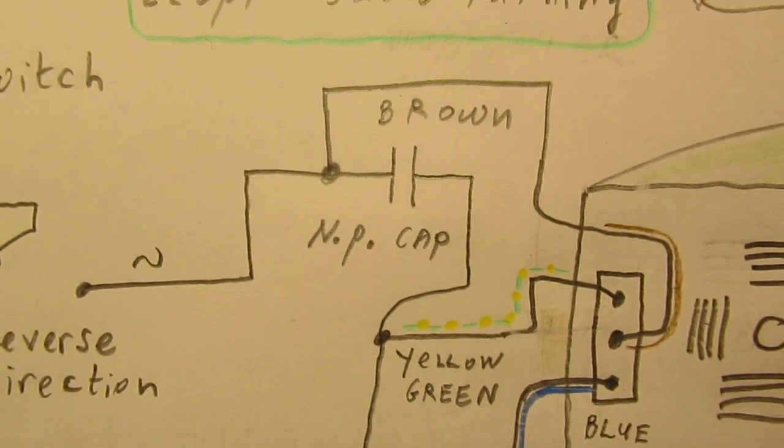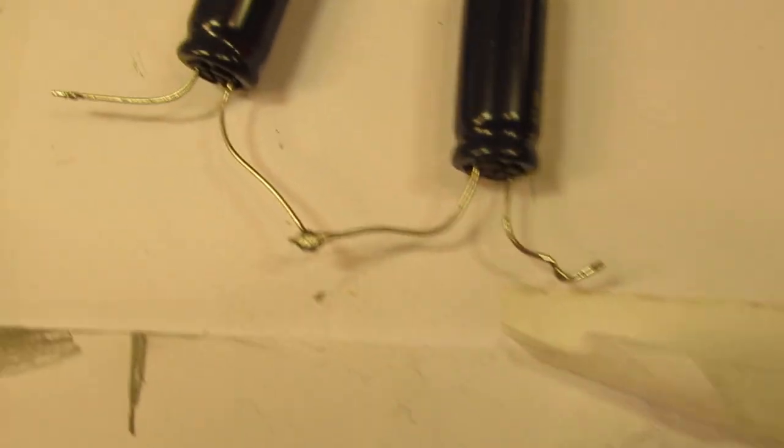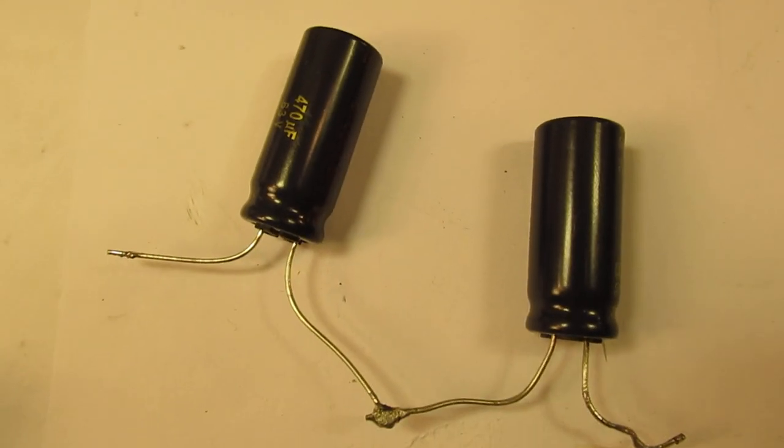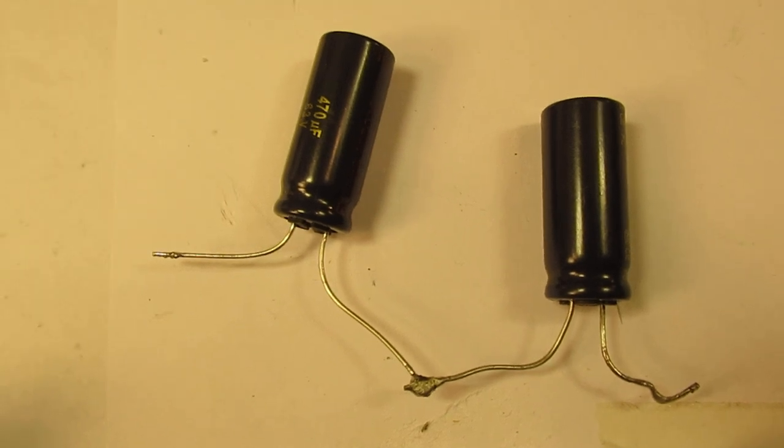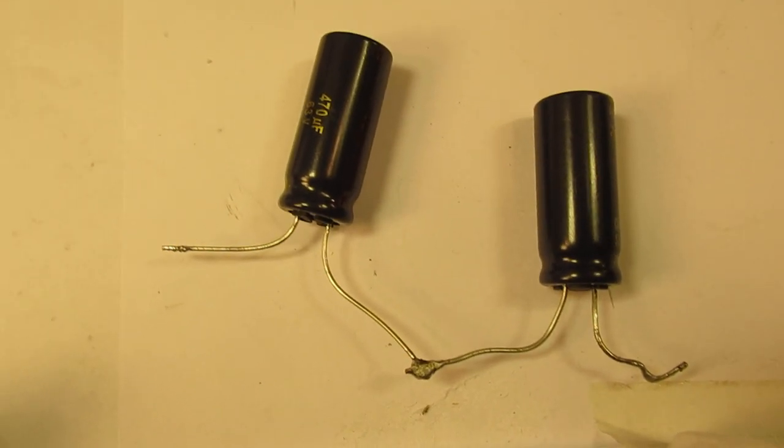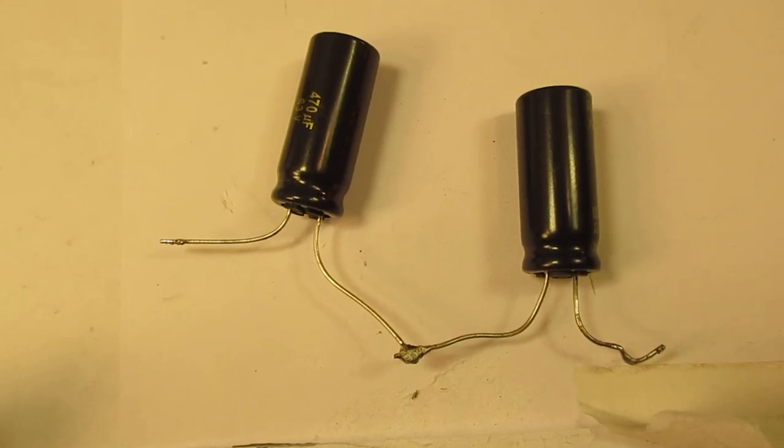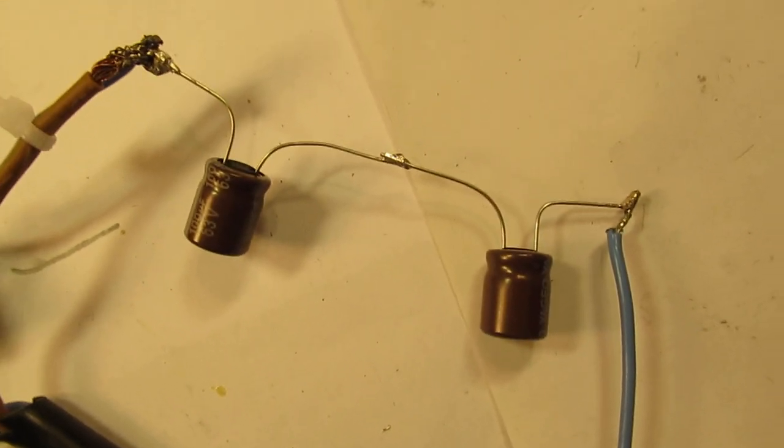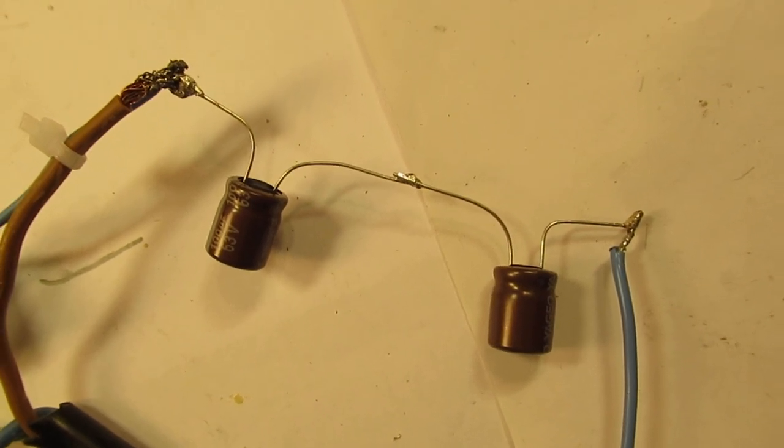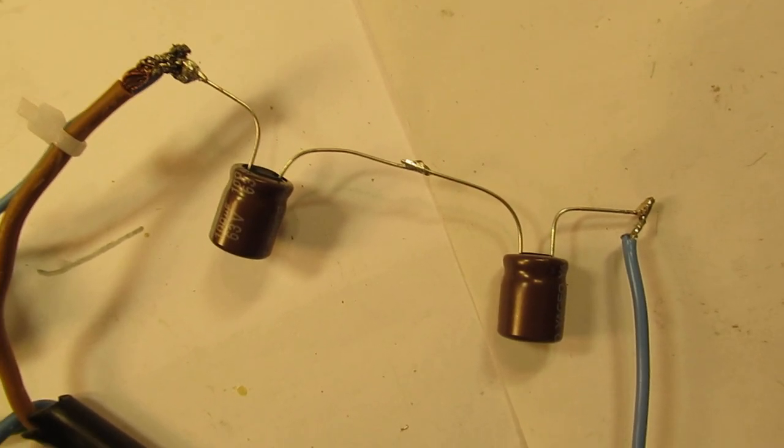I tested a few values. I had here two capacitors of 470 microfarad anti-parallel, and in that case the motor turned very slow. I cannot demonstrate it but it worked that way. And with these two capacitors, so a capacitor of 50 microfarad, the motor worked good.